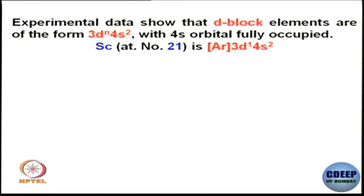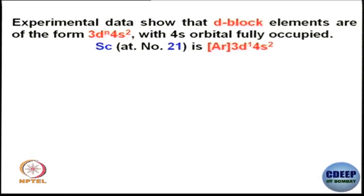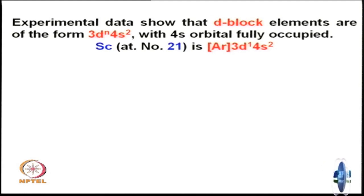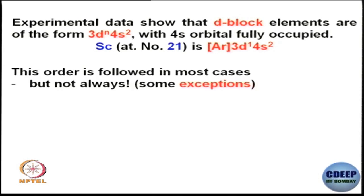Experimental data show that d-block elements are of the form 3dⁿ 4s². That means 4s electrons are getting filled preferentially compared to 3d electrons, with the 4s orbital fully occupied. For example, scandium with atomic number 21 has the electronic configuration: argon core, then 3d¹ 4s². So 4s is filled out first with 2 electrons, and then 3d¹. For titanium, it would be 3d² 4s², and so on. This order is followed in almost all cases — 4s² electrons are given first, and then the remaining electrons go into 3d.